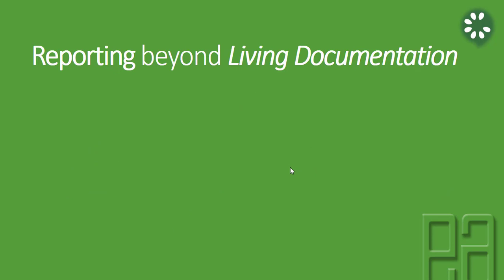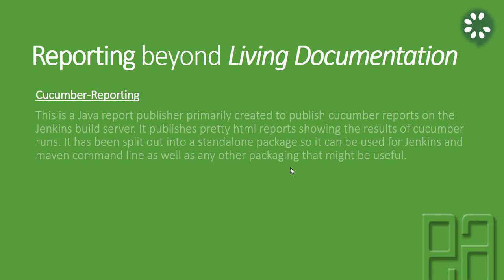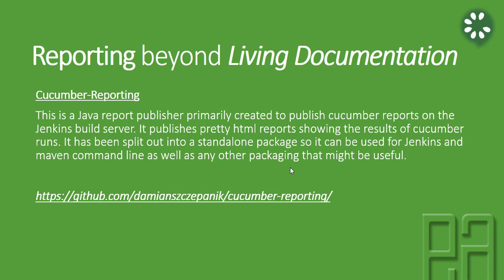Reporting beyond living documentation. In our previous video, we saw how to create a simple HTML report for our feature file and how to create a JSON file which is the test run report file. But it was kind of raw because we cannot use the JSON file as-is since there was no code to integrate the feature file generated in HTML into Cucumber's JSON file. So we are going to make use of something called Cucumber reporting this time. This is a Java reporting publisher primarily created to publish Cucumber reports on the Jenkins build server, though you can also use it on your local machine. It publishes a pretty HTML report showing the results of a Cucumber run.